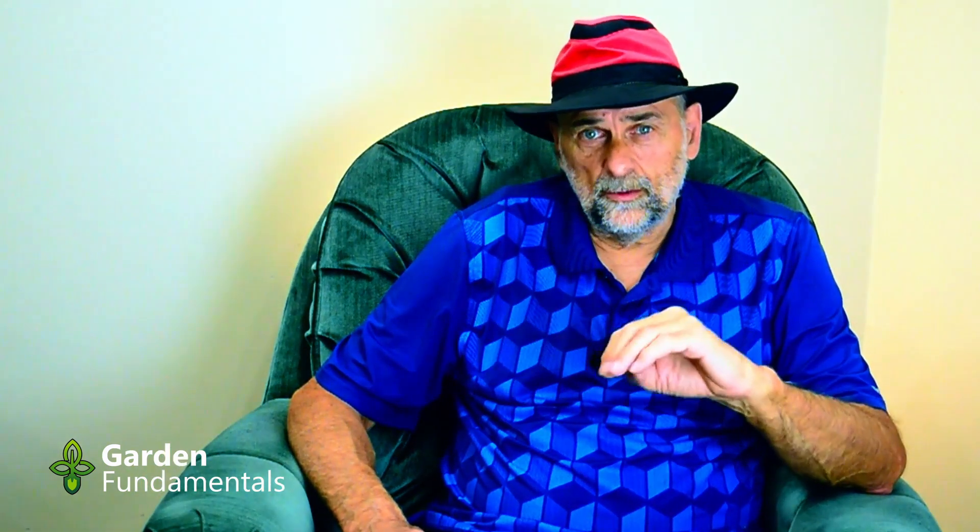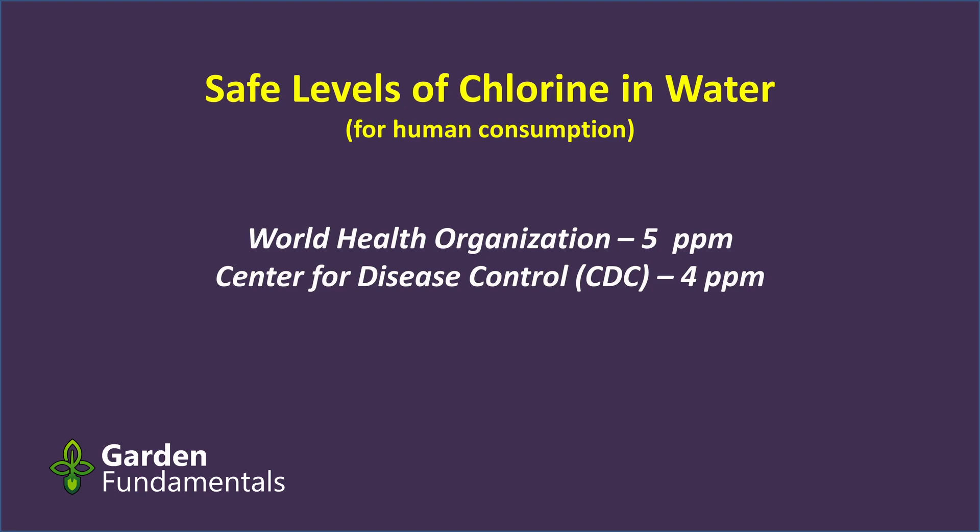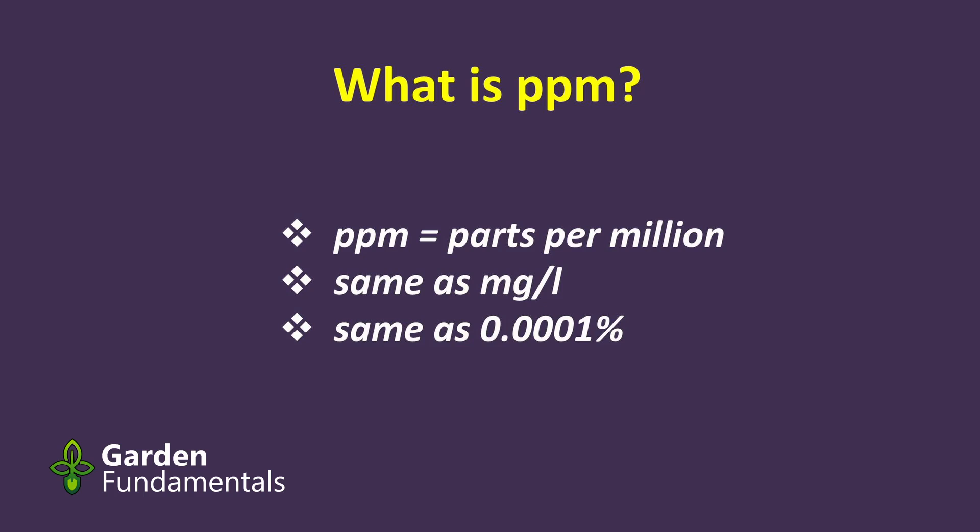How much chlorine is in drinking water? The World Health Organization and the CDC have both looked at this and determined that a level of four or five ppm is safe for us to drink. Most municipalities keep the value below that. That's the amount of chlorine in our drinking water — four parts per million. What about chloramine? It turns out the level of chloramine is the same, about four parts per million.